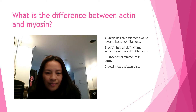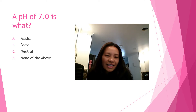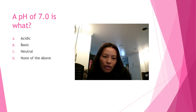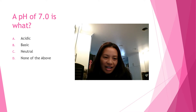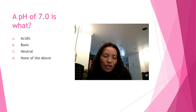Question three: a pH of 7.0 is what? Is it A) acidic, B) basic, C) neutral, or D) none of the above? The answer is neutral. From 0 to 6.9 is acidic, 7.1 to 14 is basic, and 7 is neutral.